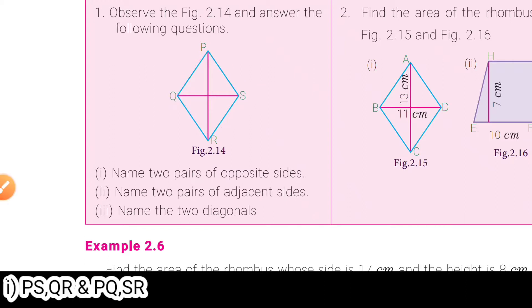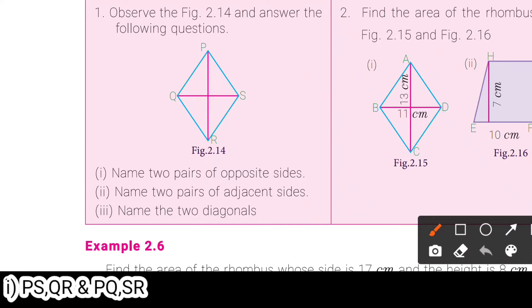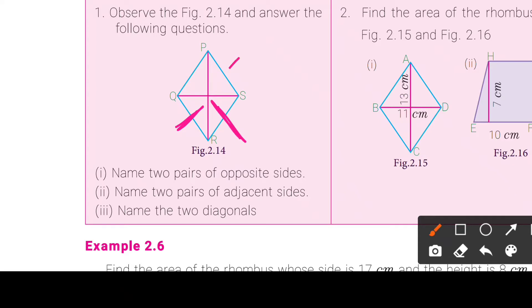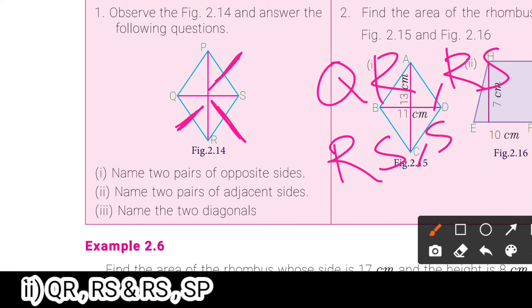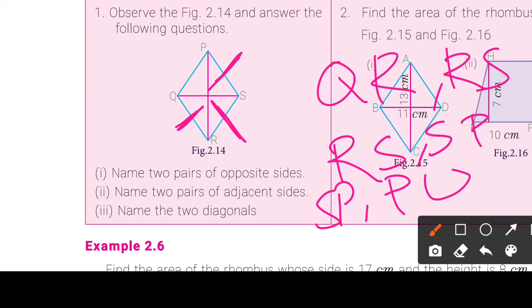Second one, name two pairs of adjacent sides. The adjacent sides are QR and the sides adjacent to it on the bottom and right.